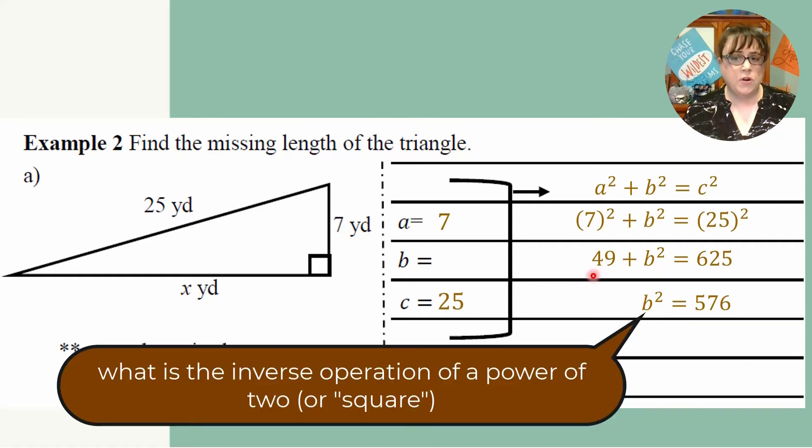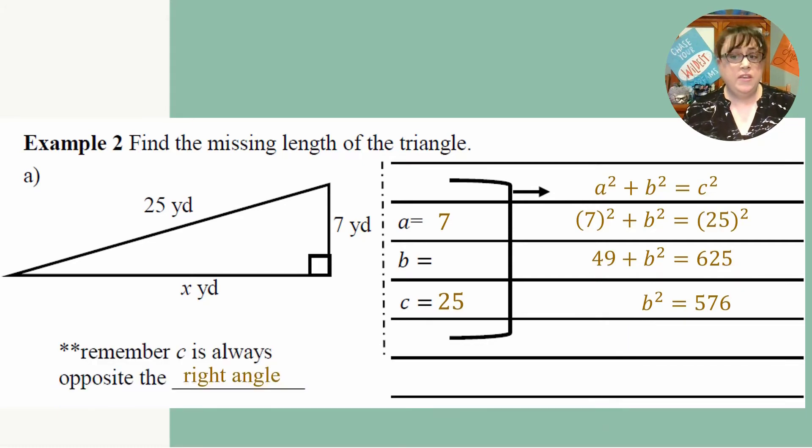And now subtract 49 off of both sides. And you get 576. So now you have to take the square root to get to 24. This was subtracting 49 off of both sides, and then I took the square root to get to 24.